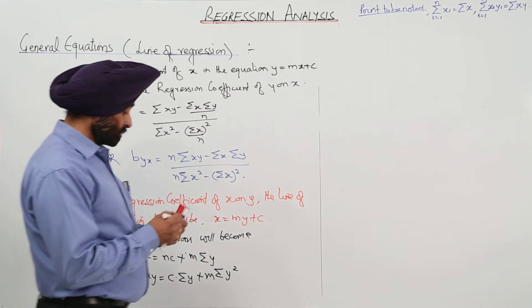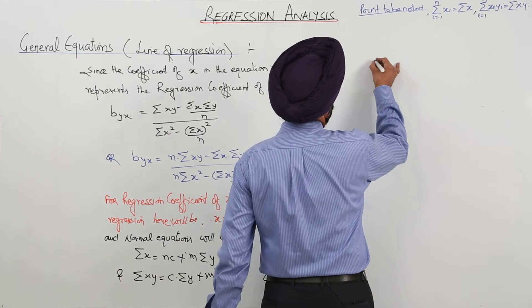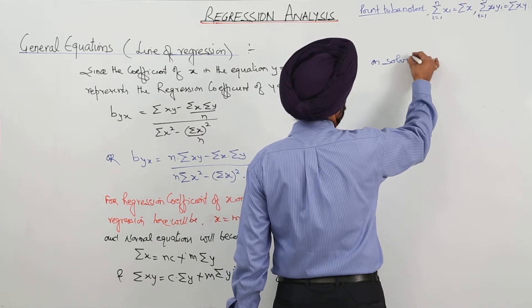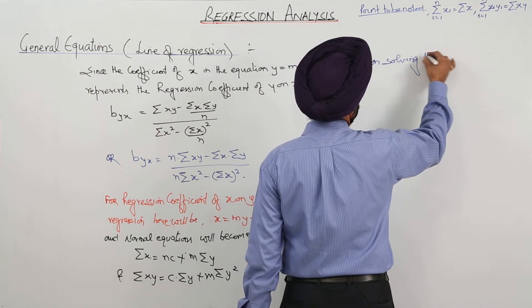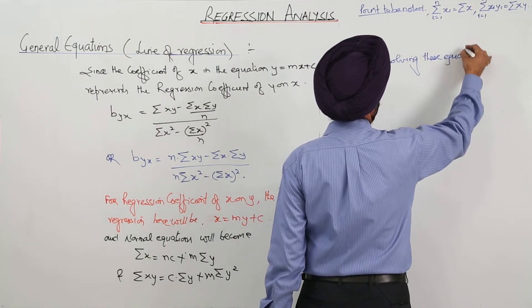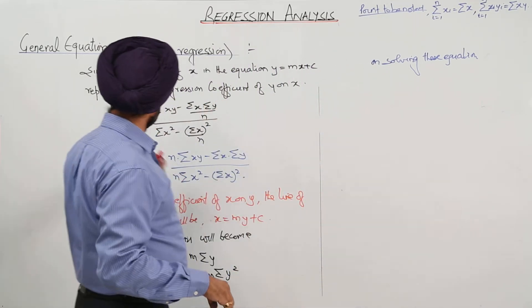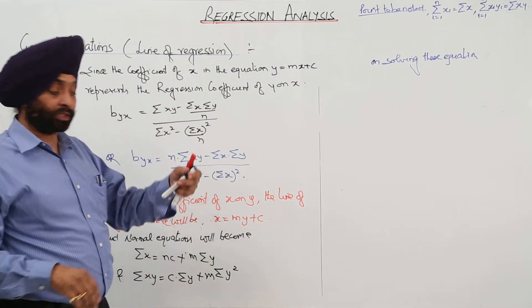Now solving these equations, on solving these equations, now what we are getting here? Now it will be b, earlier it was b y x, now it will be b x y.